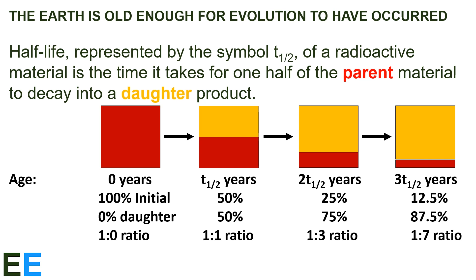Let's look at radioactive decay in more detail with a diagram. The red box on the left indicates an initial amount of radioactive material — let's give it an age of zero years when it begins to decay. At that initial point, 100% of the material is the initial element and 0% is the daughter element, which we can think of as a 1 to 0 ratio. After one half-life, which is T sub one-half years, half of the parent material decays into the daughter product. Now 50% of the deposit is the initial material and 50% is the daughter material — a 1 to 1 ratio.